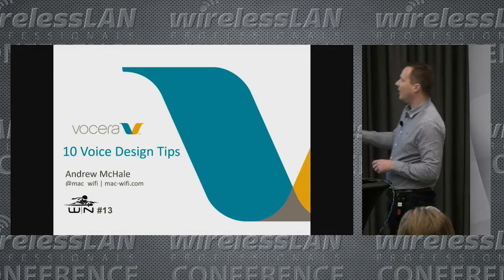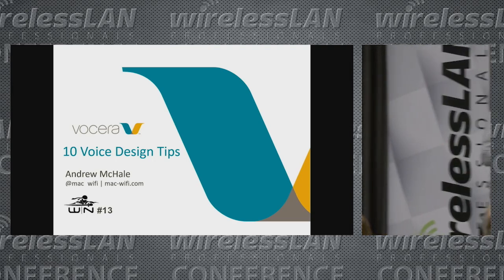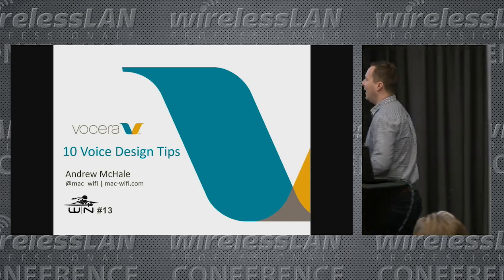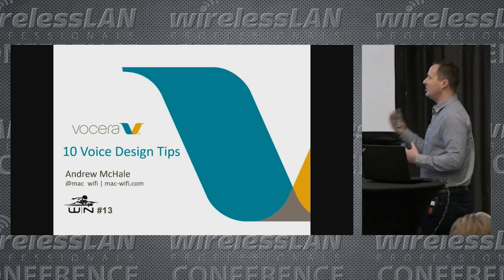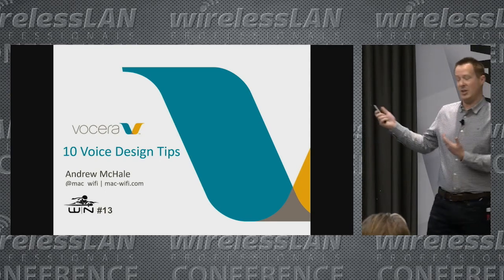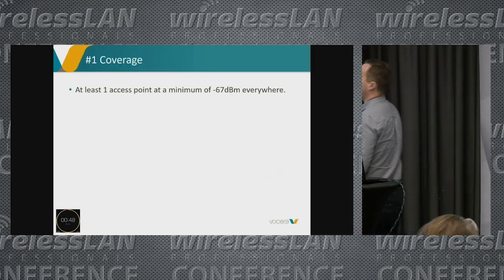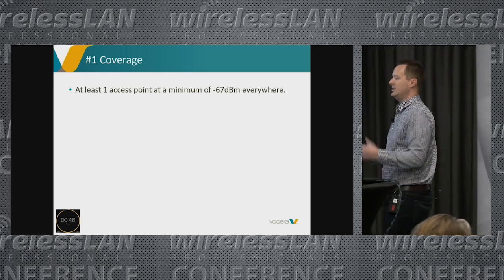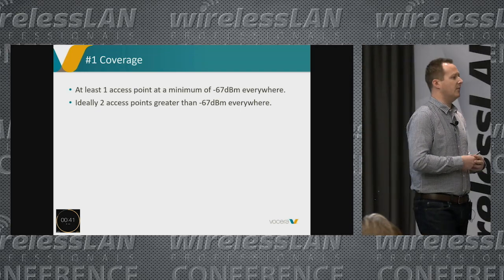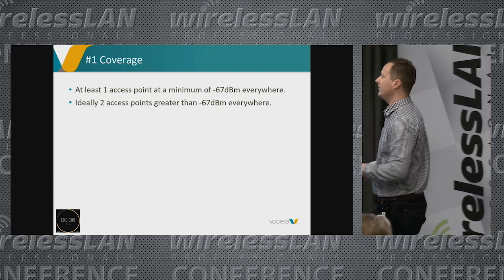You're not going to like all these suggestions — it comes down to what is your most important client. I don't like the term 'least capable,' I'll just say 'most picky.' If voice is one of your most important and most demanding clients, then you need to do these whether you like them or not. Everyone knows at least one access point at -67 dBm everywhere; ideally we want two access points at -67 to give us good transition and redundancy if an AP goes down.